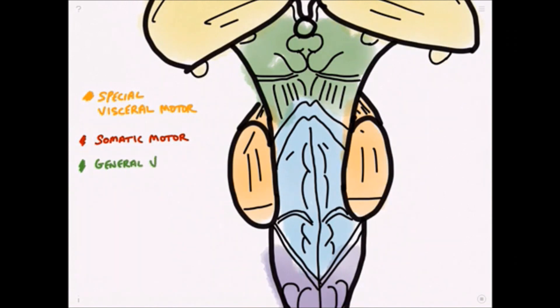And finally, we have general visceral efferent nuclei, and the nerves from here don't innervate striated muscle. Instead they provide pre-ganglionic parasympathetic fibers to innervate glands and smooth muscle.